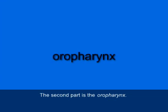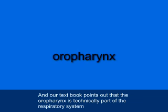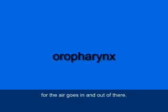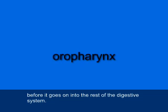The second part is the oropharynx — O-R-O-P-H-A-R-Y-N-X. Oro refers to mouth, and the oropharynx is the portion of the throat that is visible when looking into the mouth. Our textbook points out that the oropharynx is technically part of the respiratory system because air passes through it, but it's also part of the digestive system because food passes through it on the way to the rest of the digestive system.